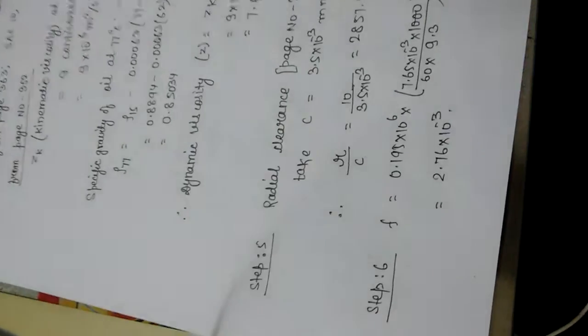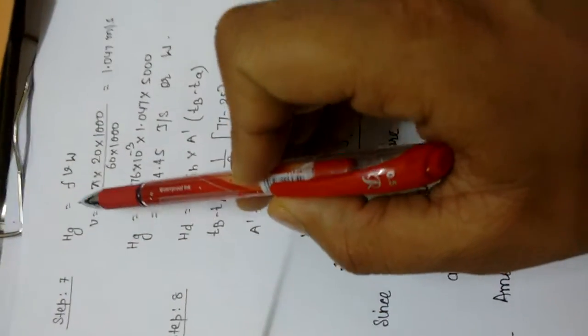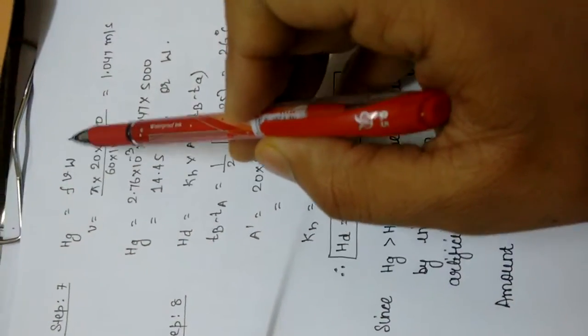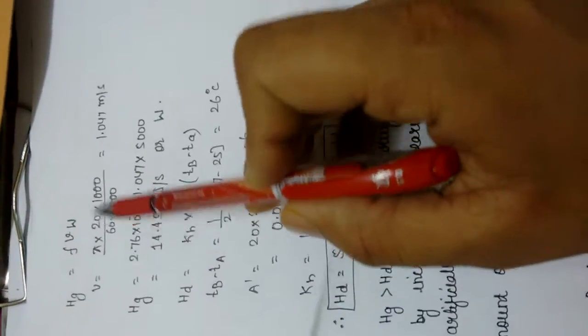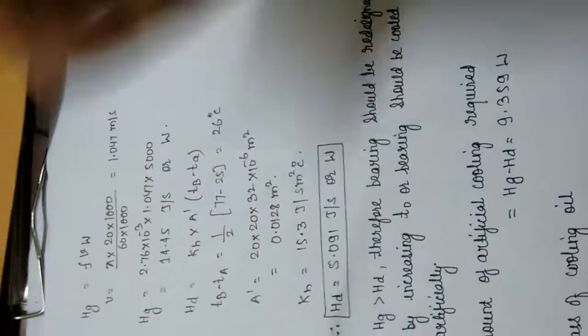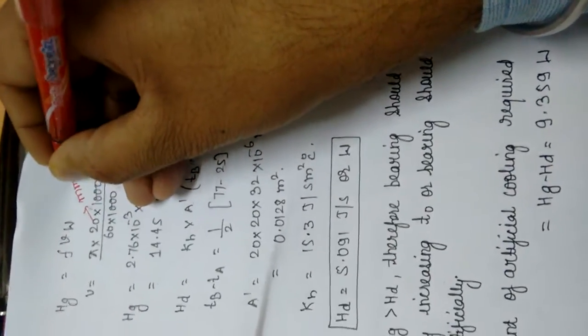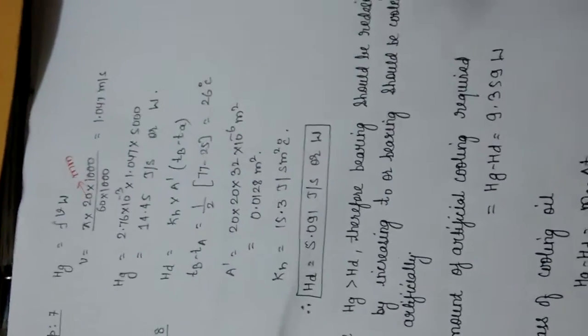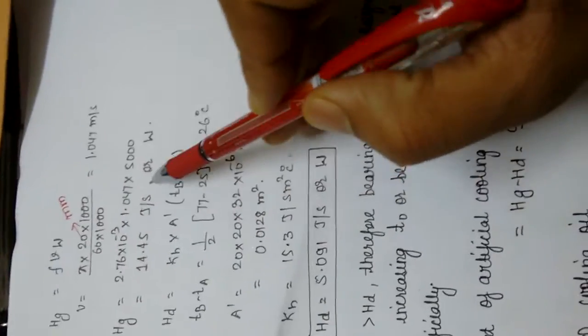Step 7: After calculating the coefficient of friction, we find the heat generated. Hg = F × V × W, where F is the coefficient of friction and V = π × D × N / (60 × 1000), with D in millimeters. So Hg = 14.45 Joules per second.